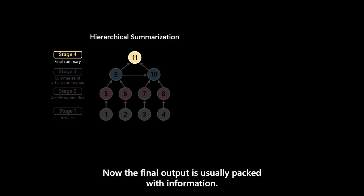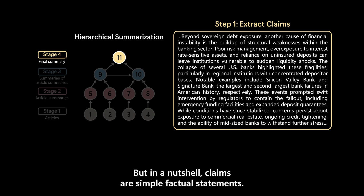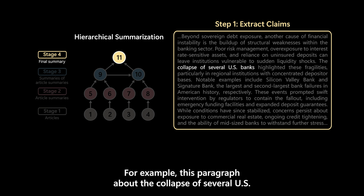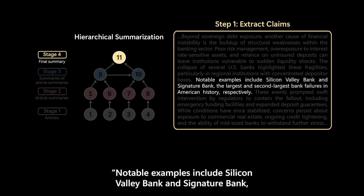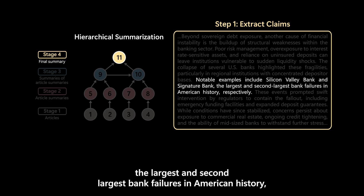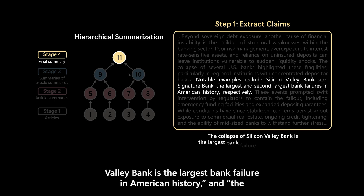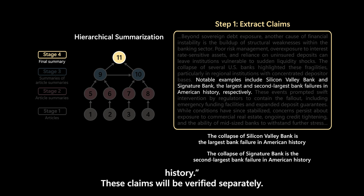The final output is usually packed with information, so we start by extracting claims using a system I developed called Claimify. Claims are simple factual statements. For example, a paragraph about the collapse of several US banks contains the sentence: 'Notable examples include Silicon Valley Bank and Signature Bank, the largest and second-largest bank failures in American history, respectively.' There are at least two claims here: the collapse of Silicon Valley Bank is the largest bank failure in American history, and the collapse of Signature Bank is the second-largest. These claims will be verified separately.